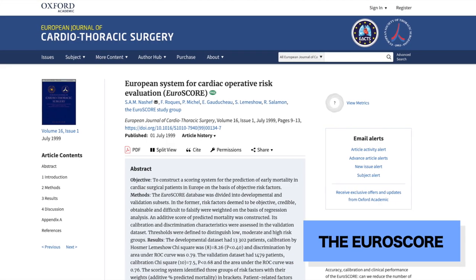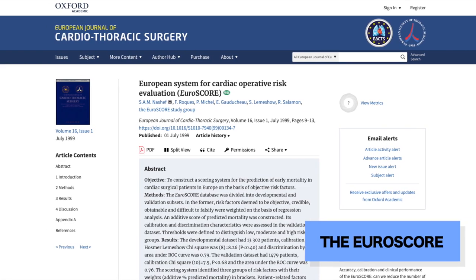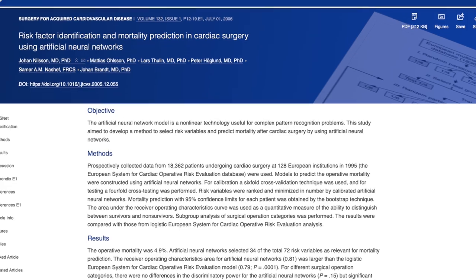There are a number of scoring systems that I'm aware of where the initial method was using more simple approaches and now we're using things like neural networks. For example, the EuroSCORE is a score that's used for predicting mortality based on cardiac surgery. The initial EuroSCORE model used, I believe, logistic regression. And then more recently, the latest version of the EuroSCORE now uses a neural network. It can improve the performance of these algorithms because it enables us to identify slightly more complex patterns and take in more variables.